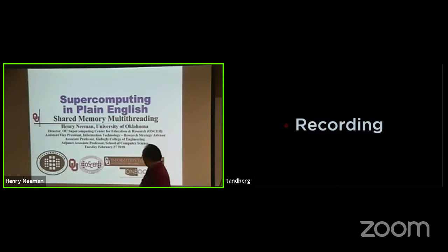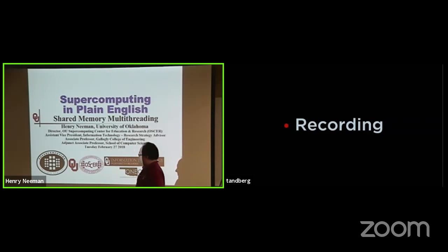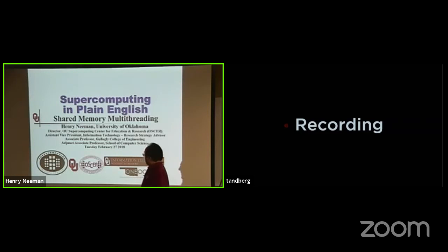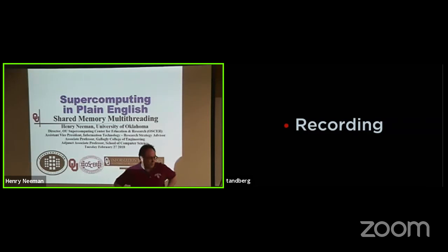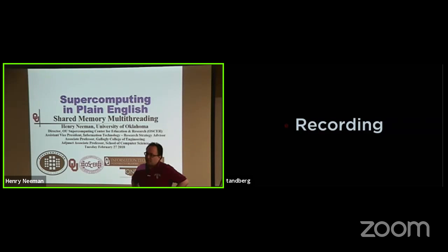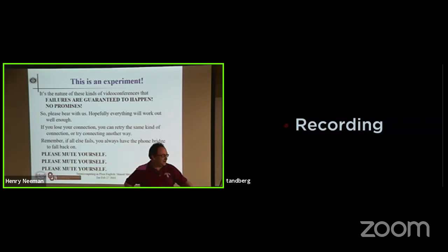Computing in Plain English, chapter 5 — although this is episode 6, because we did a two-parter a while back. This is shared memory multi-threading, and now we're going to actually get to doing parallelism on multiple cores. Up till now, all of the parallelism we've been talking about has been within a single core. Now we're going to start digging into multiple cores.